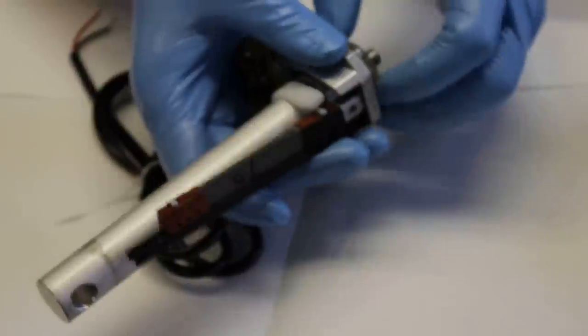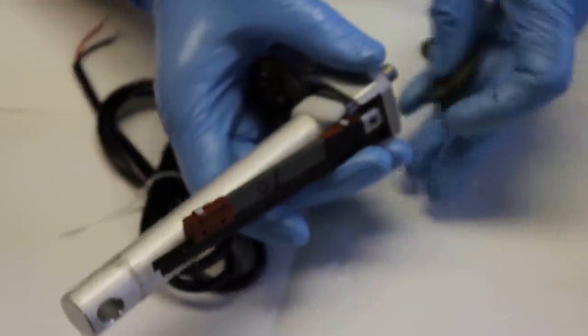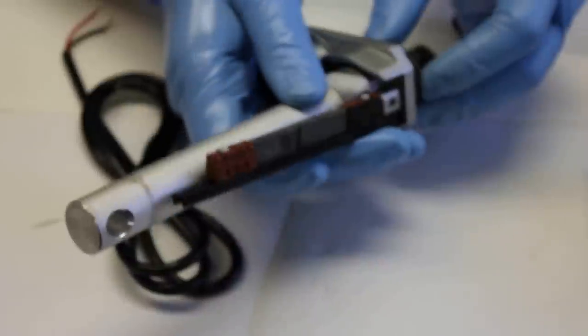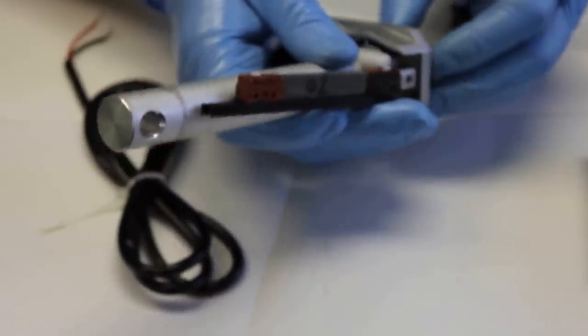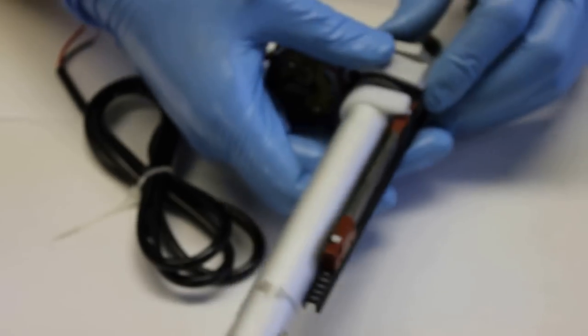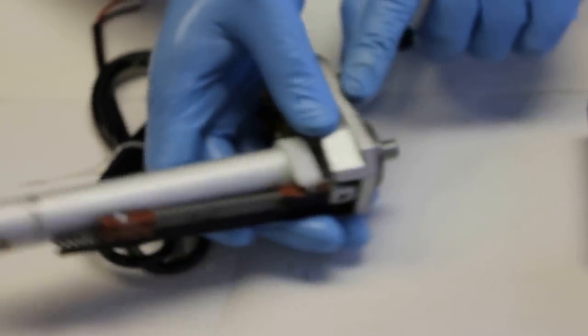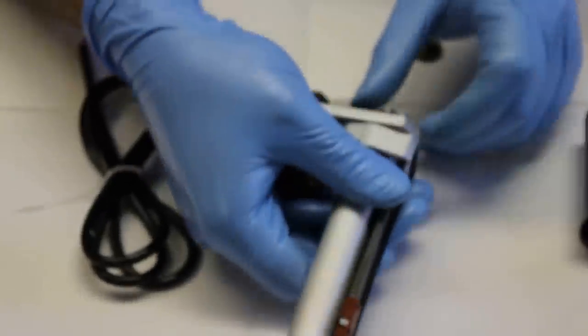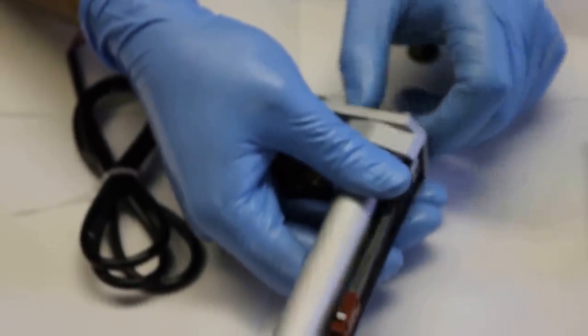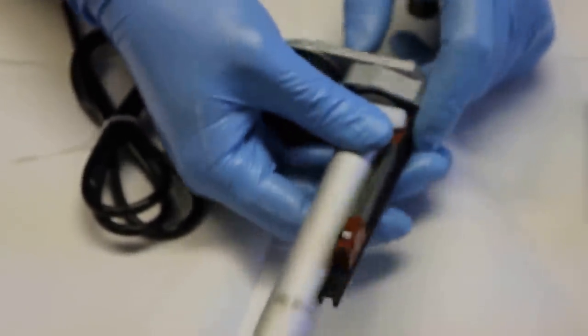I'm going to show you a quick example of how it works. So as I was mentioning earlier, the motor turns some gears, which eventually turns this last gear here. When this gear turns, the actuator extends.